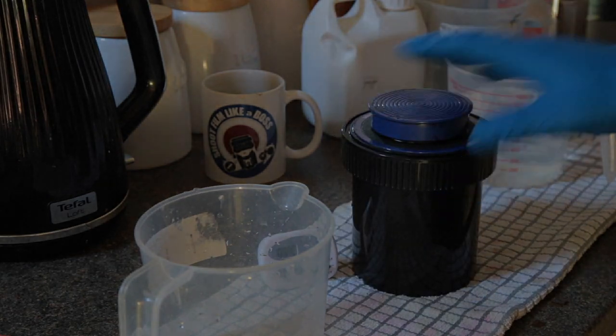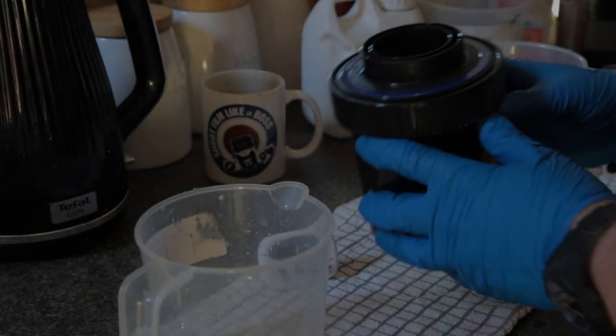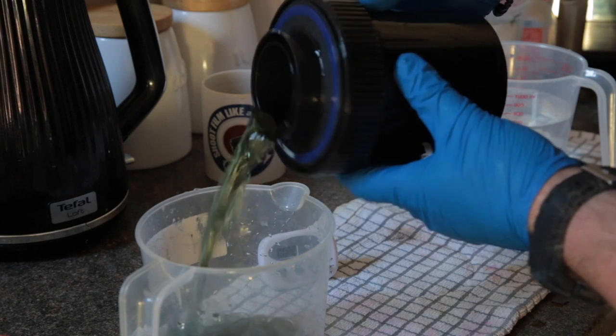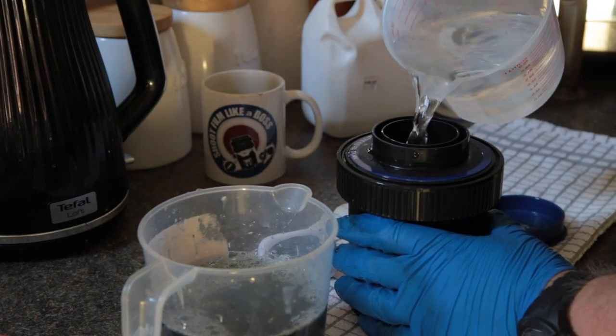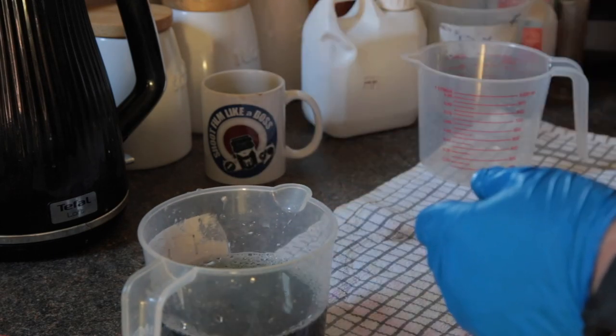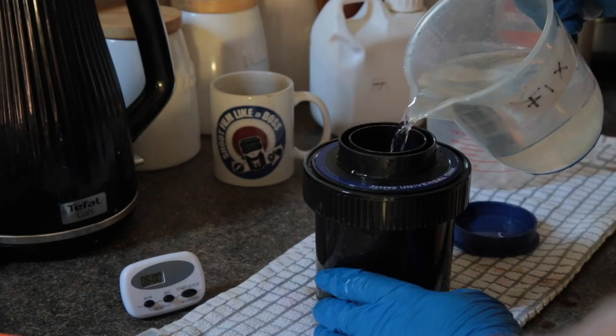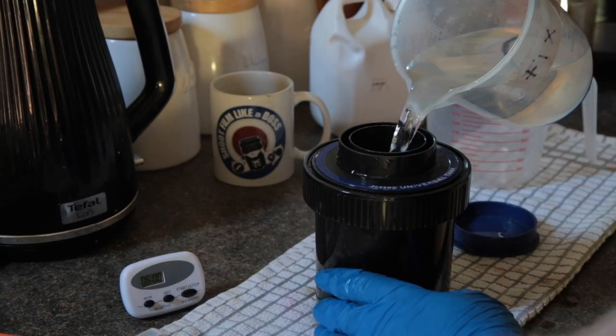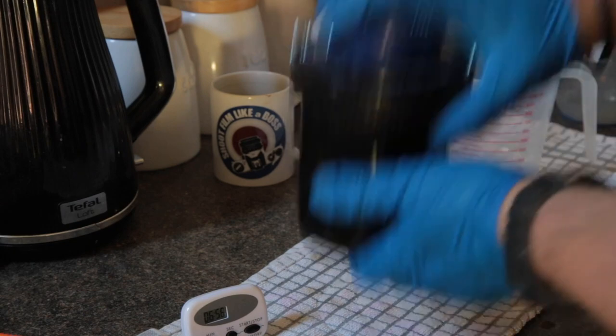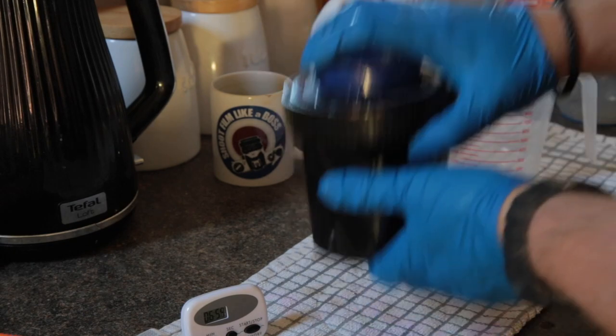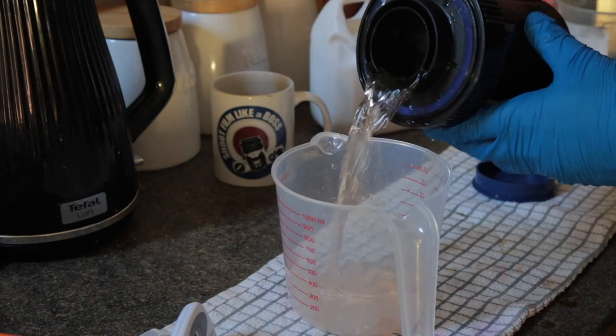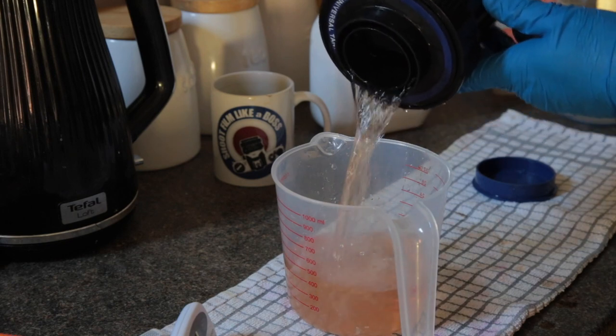510 Pyro is a good fine-grained developer and has staining properties which helps preserve the highlights. After the development time, I stopped the development using tap water, and then fixed the film with Photospeed's FX30 odorless developer, which has a less aggressive citric acid in the base. If I used stop bath and the Photospeed FX20, that would have cancelled the staining effect, which I didn't want.